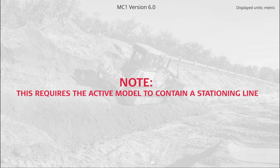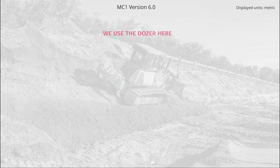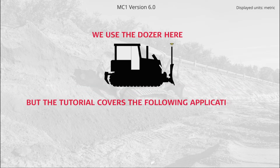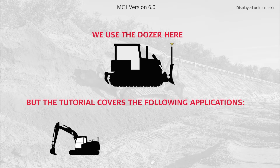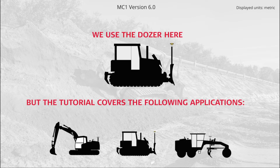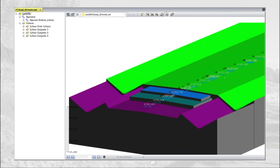This requires the active model to contain a stationing line. We use the dozer here, but the tutorial covers the following applications: excavator, dozer, grader. The reference model we use for this tutorial is a land XML file containing four surfaces and an alignment or centerline.